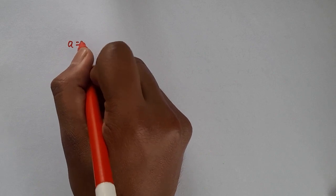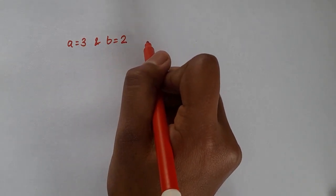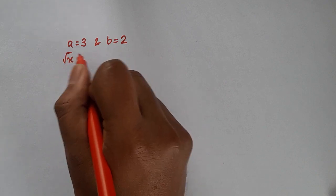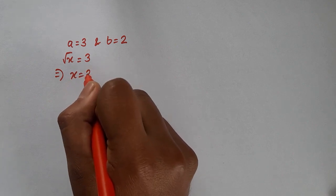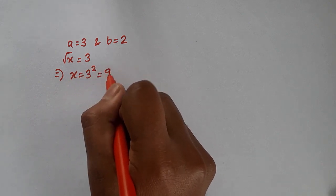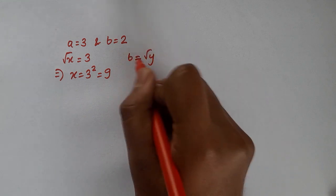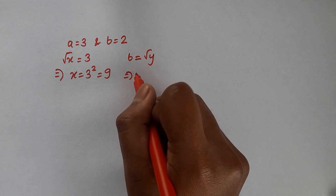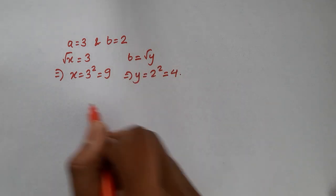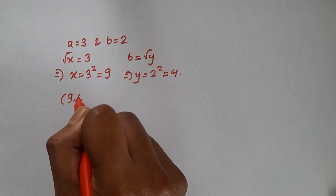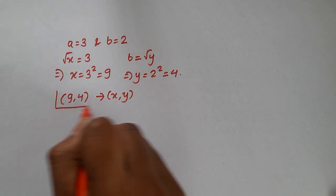Placing b equal to 2, we get a is equal to 2 plus 1, so a is equal to 3. Since root x equals a, root x equals 3, and squaring both sides gives x equal to 9. Since b equals root y, squaring both sides gives y equal to 4. So (9, 4) is the only set of values for x and y which satisfies the given equations.